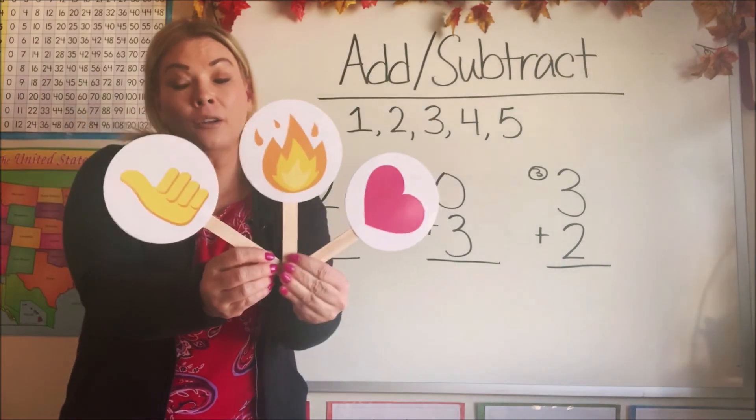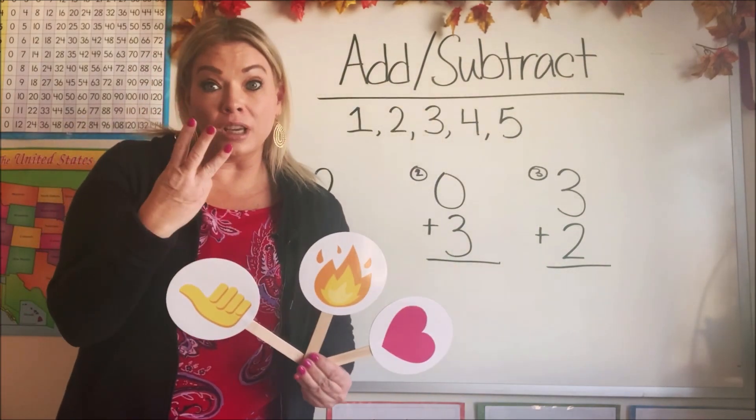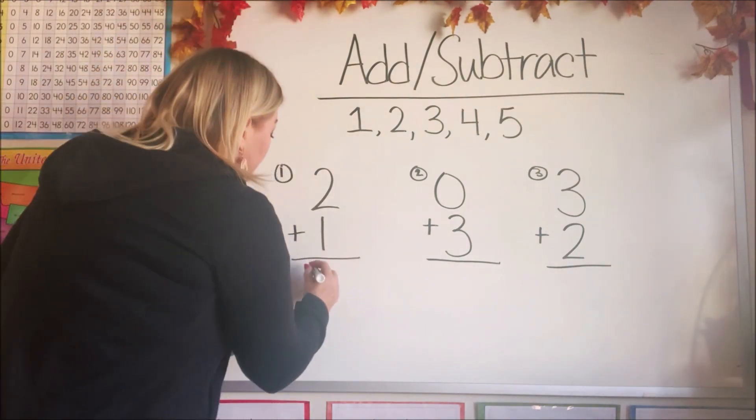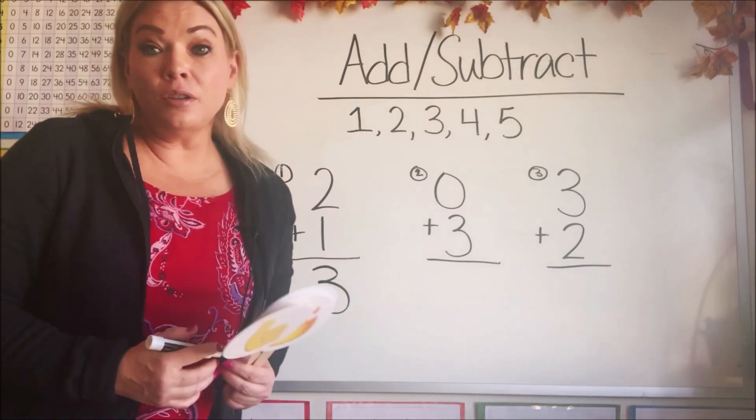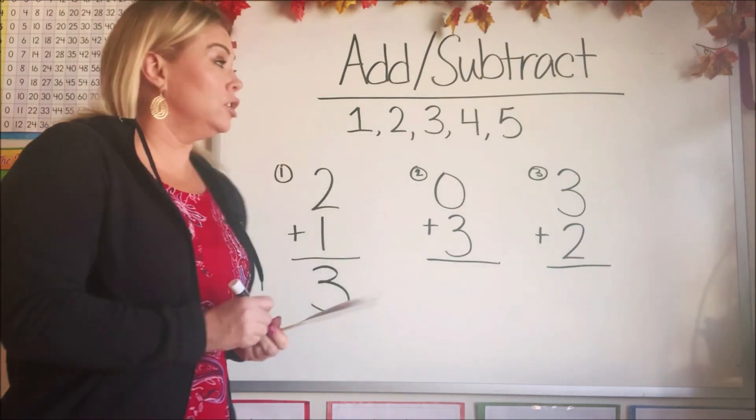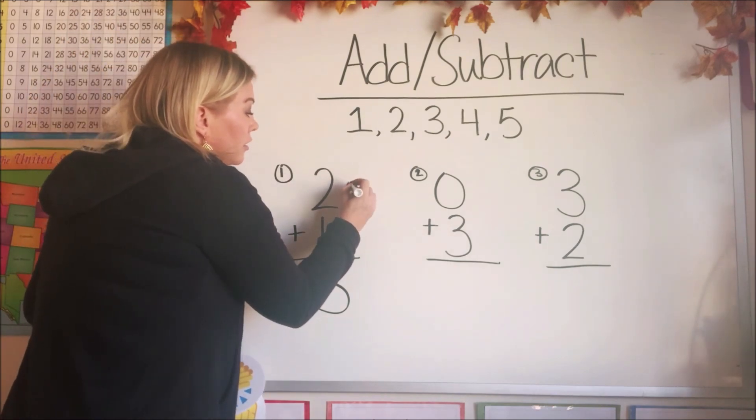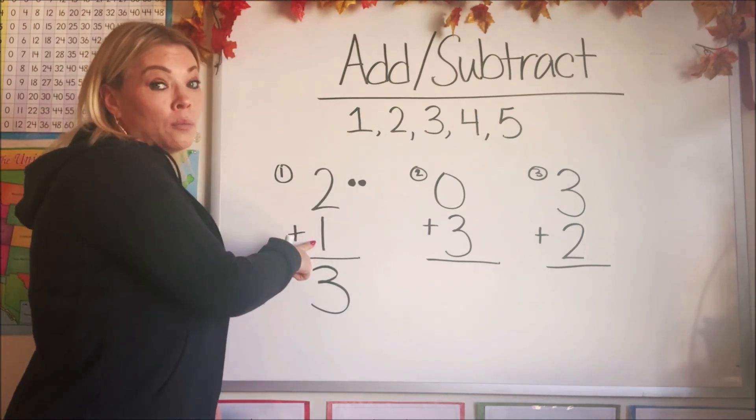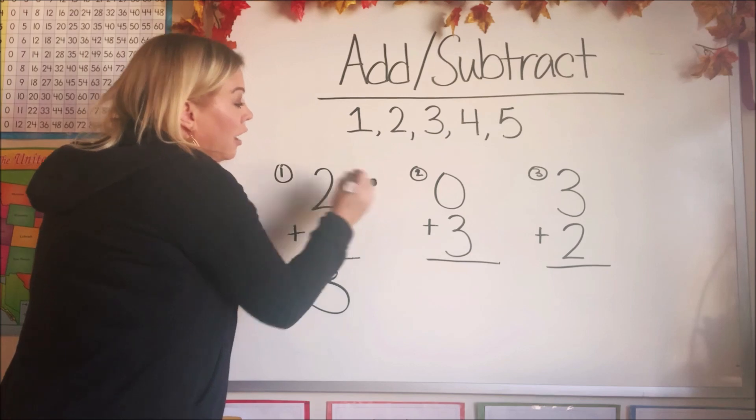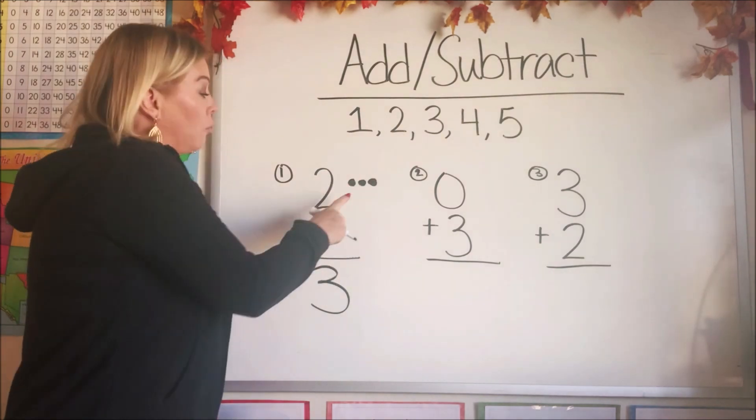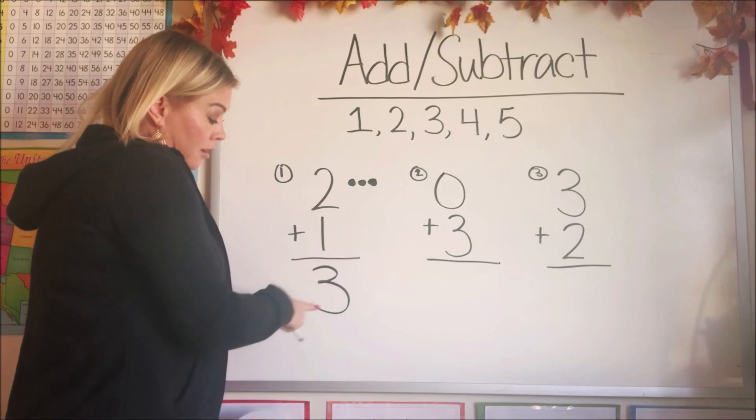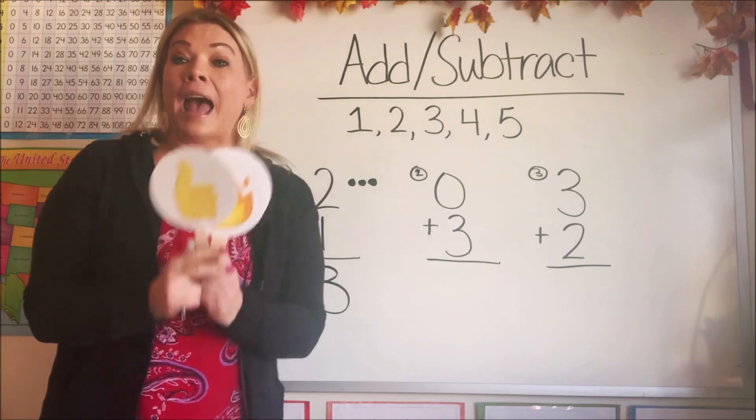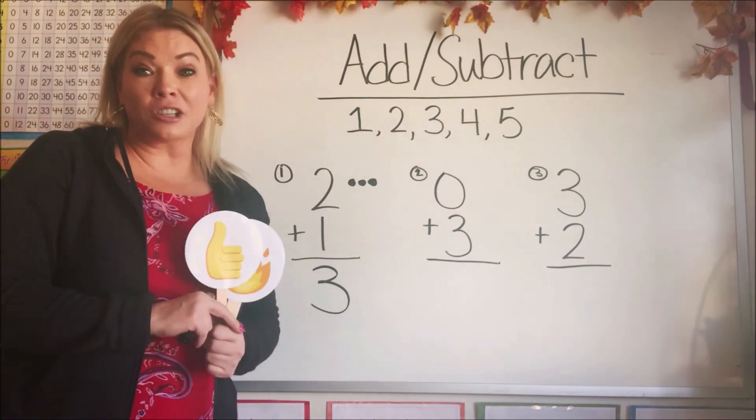So when we took two and we added one, we got three. Let's go ahead and write three as our answer. Now if you needed to do that and you didn't have pictures or something to use, you could draw little circles. There's two circles and we need to add one more circle to it. So how many circles do we have together now? One, two, three. Did we get the same answer? We did.